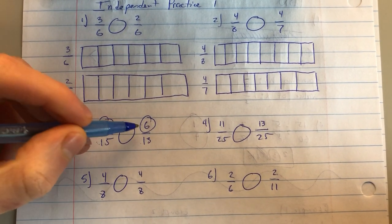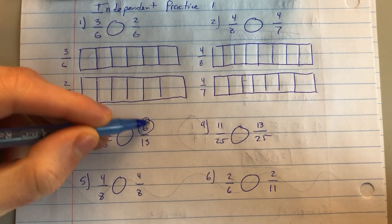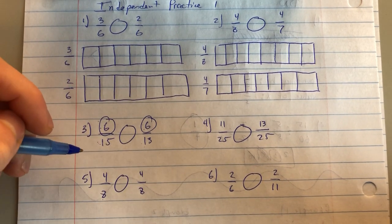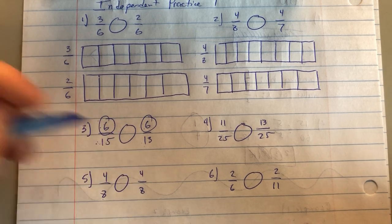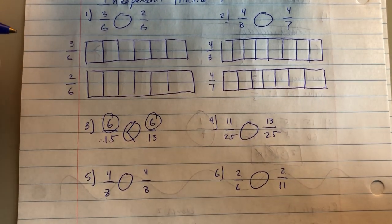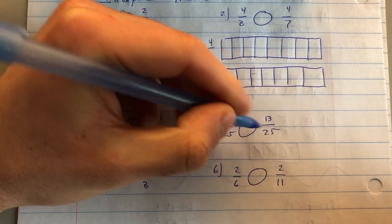When I look at 6 fifteenths and 6 thirteenths, I see that my numerator is the same, 6. I know that when the numerators are the same, the larger the denominator, the smaller the fraction. 15 is larger than 13, so 6 fifteenths is less than 6 thirteenths.